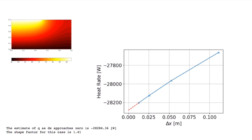And if I do that, my estimate of Q as dx approaches 0 is minus 28,284 at this point right here, watts. And that means I can calculate the shape factor. Here, Q over K over the difference in temperature here and here. And that gives me a shape factor of 1.41. So now I know a shape factor I could use for this particular geometry.